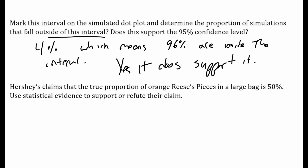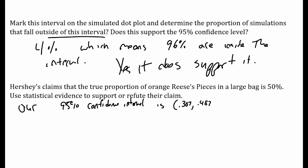Hershey claims that the true population proportion of orange Reese's in a large bag is 50%. Use statistical evidence to support or refute their claim. Our 95% confidence interval is 0.307 to 0.487, which represents a range of plausible population proportions.